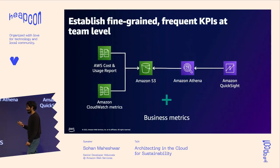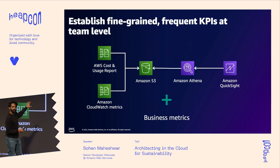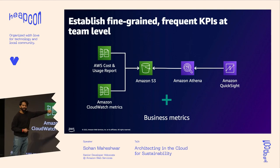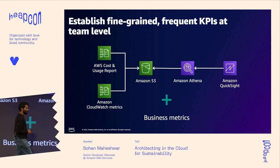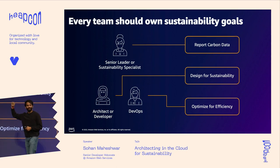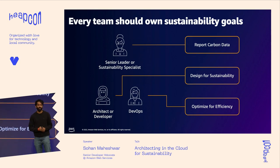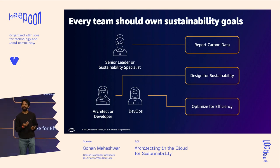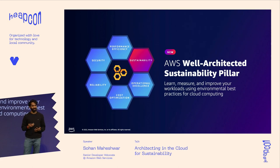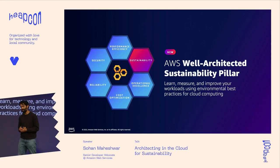It's very important for sustainability to be part of your reporting and metrics. Try to find fine-grained KPIs that your team can own. You can build dashboards using AWS — store data in S3, process it with Athena, and build dashboards using QuickSight. Everyone in the team should own sustainability goals: an architect or dev can design and code for sustainability, a DevOps person can optimize for efficiency, and a senior leader reports carbon data to customers and leadership. Check out the well-architected sustainability pillar to evaluate your workload.